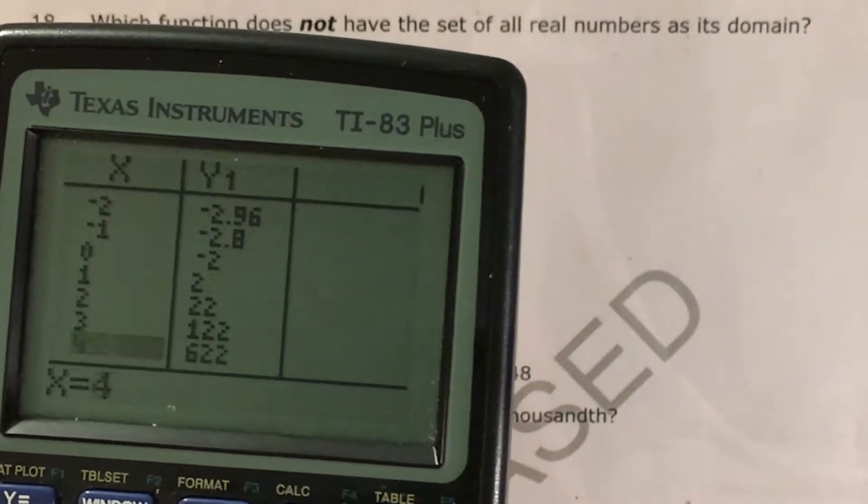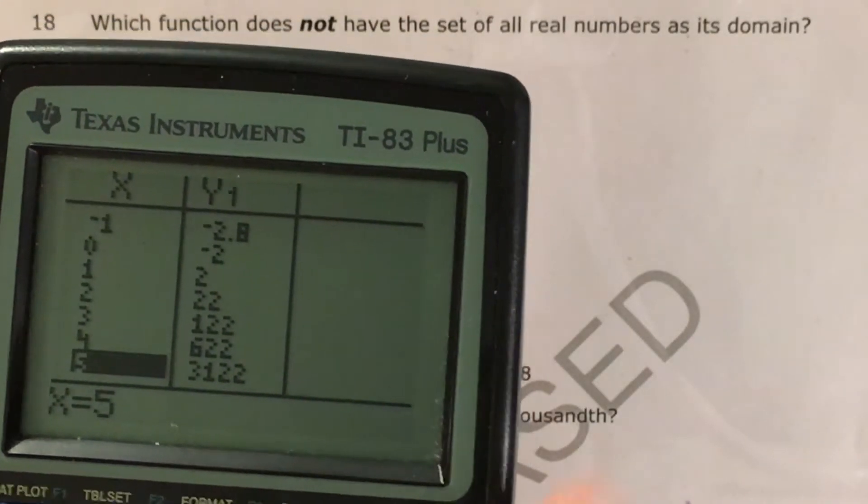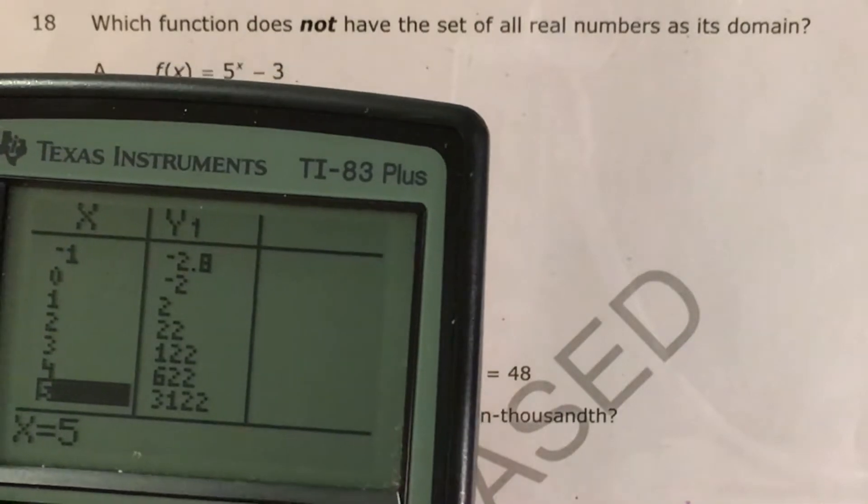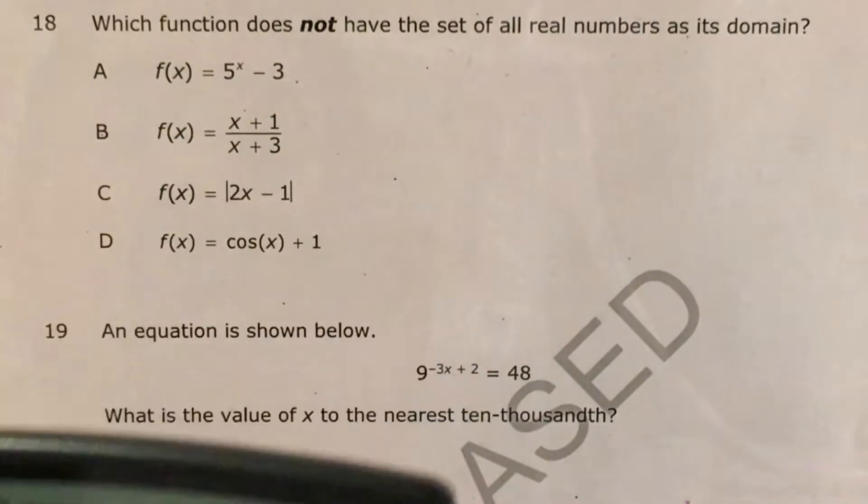And essentially, for every value of X, it gives me the corresponding Y value, and I can see if there's any values of X that I can't plug in. So that was choice A.